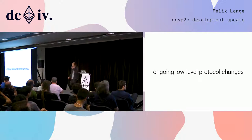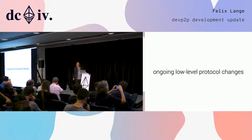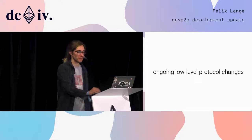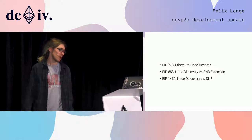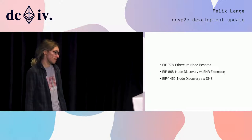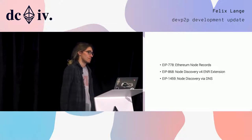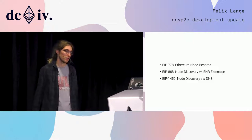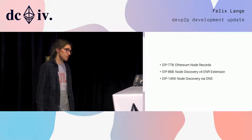There are some ongoing changes to the low-level protocols, independent of any actual implementation. This year I published three EIP drafts. The first is EIP778 — that's Ethereum Node Records — which is kind of at the heart of it. Ethereum Node Records are a new concept: a small document format with node metadata. It's a bit like business cards for nodes.